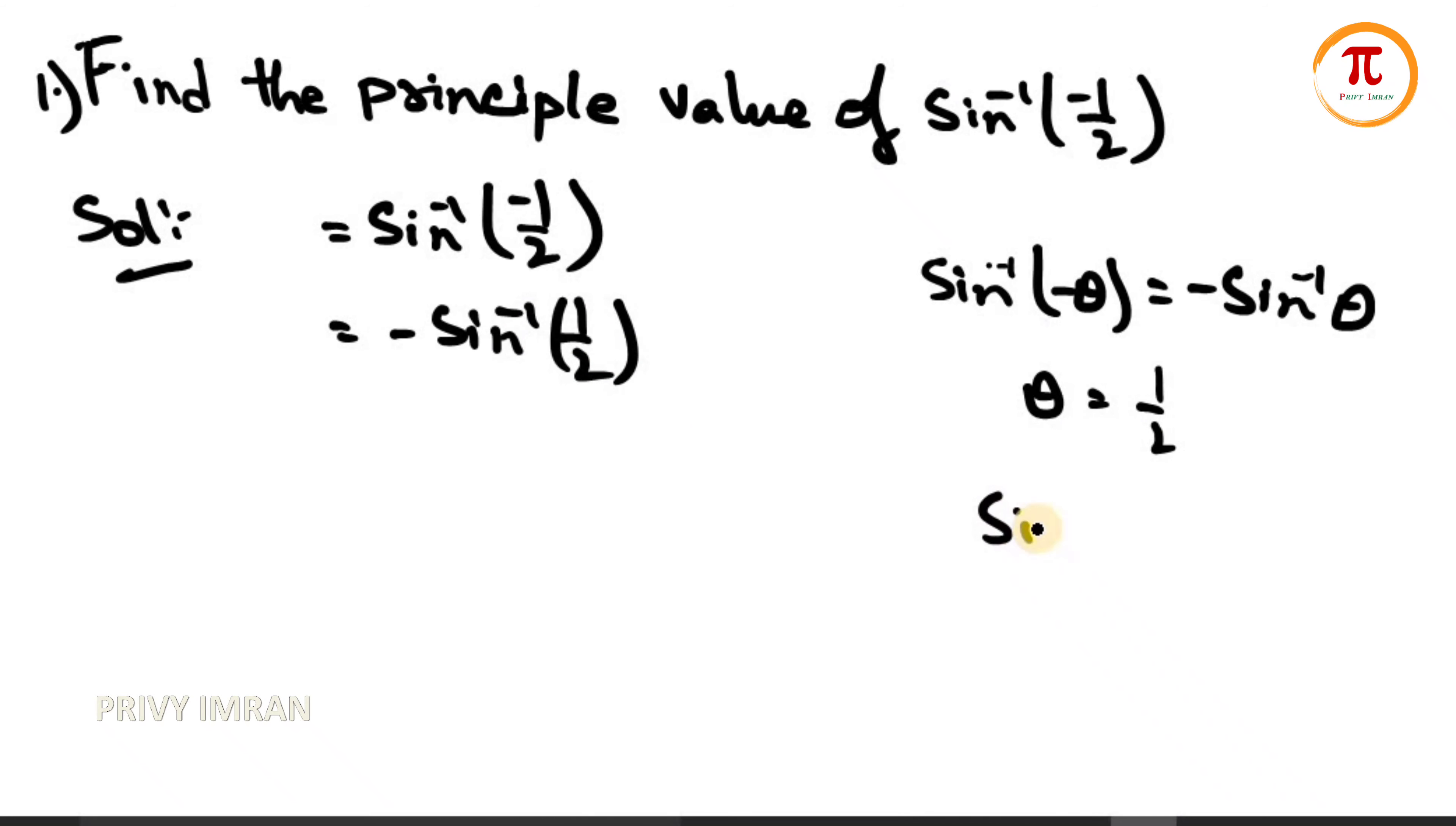...that sin(30°) = 1/2. Hence, 30° can be written as sin⁻¹(1/2). Let me substitute here. The next step can be written as -30°. This is in degree measure. If you want radian measure, it can be written as -π/6. Hence, -π/6 is the principal value of sin⁻¹(-1/2).